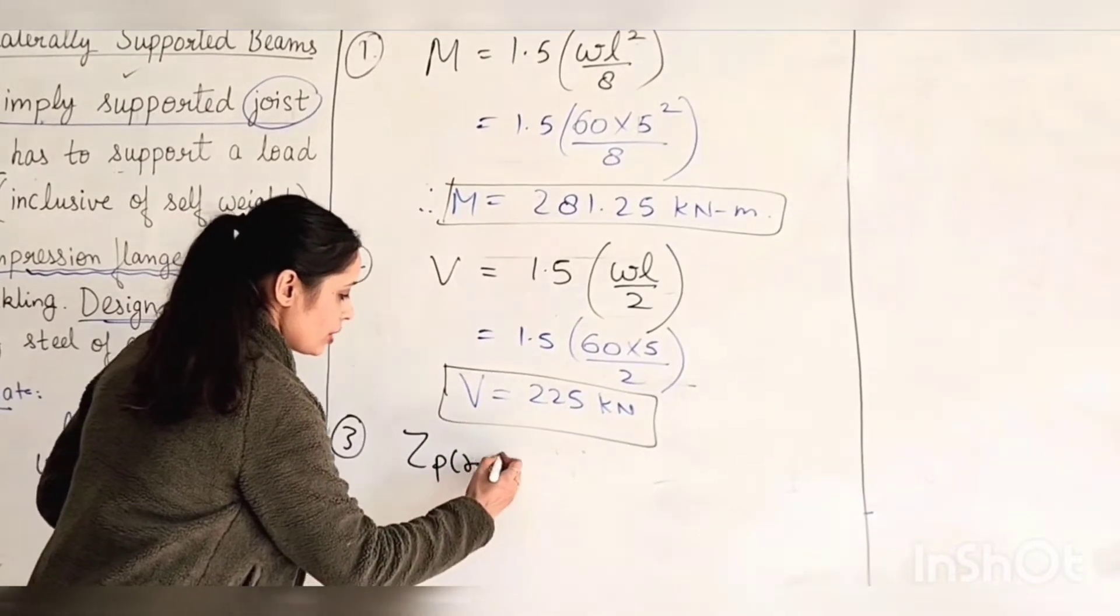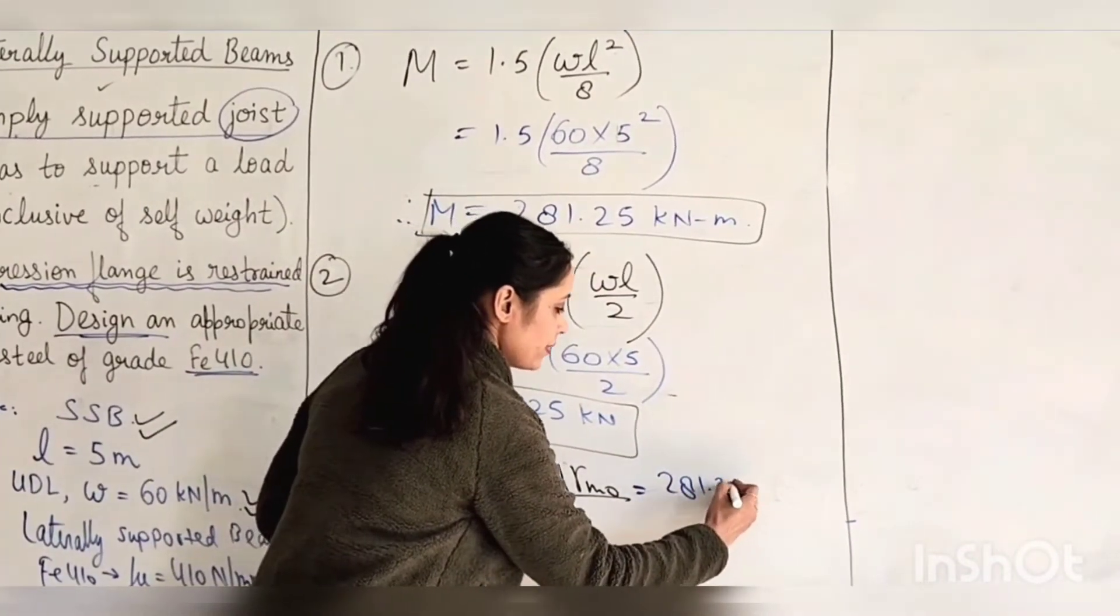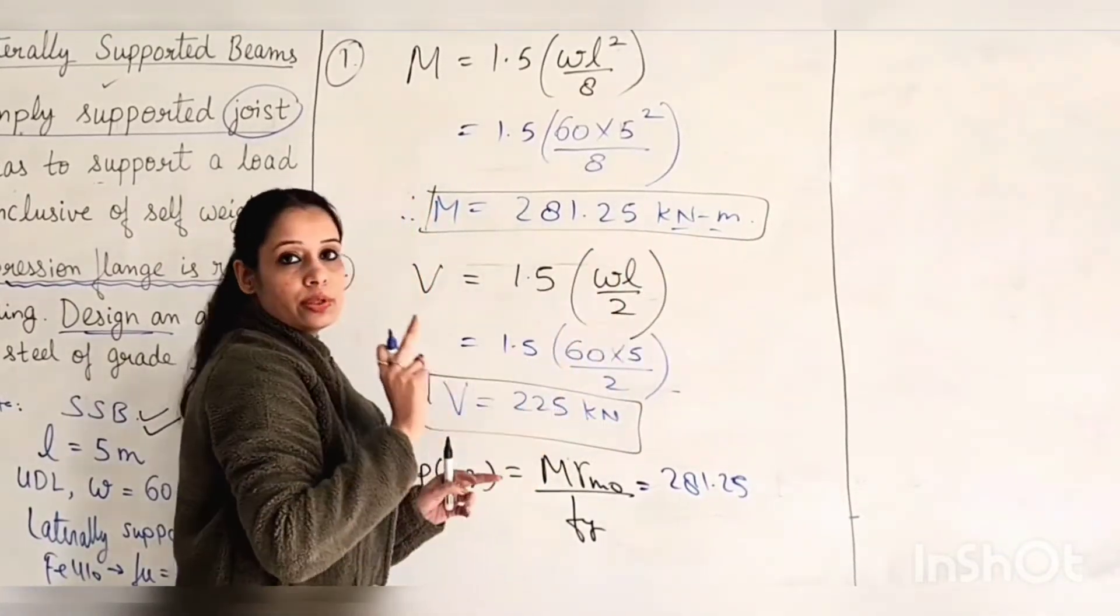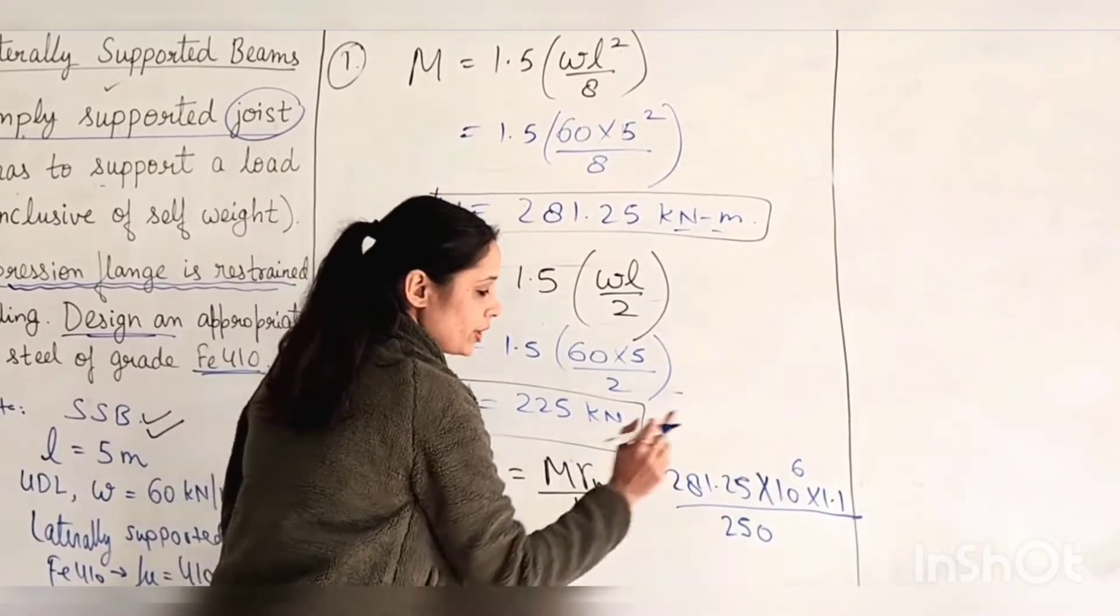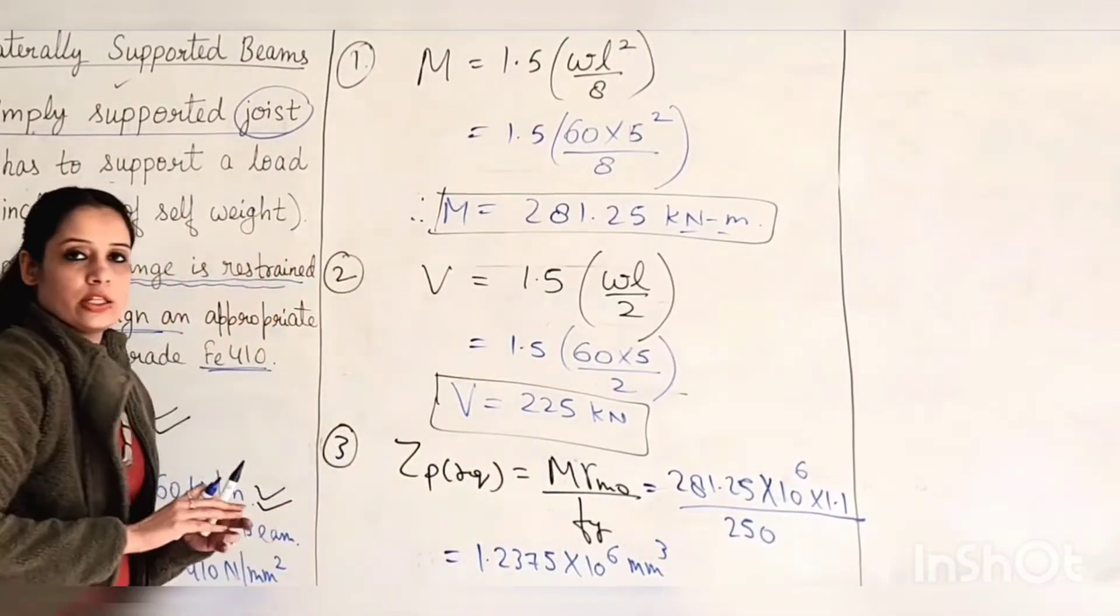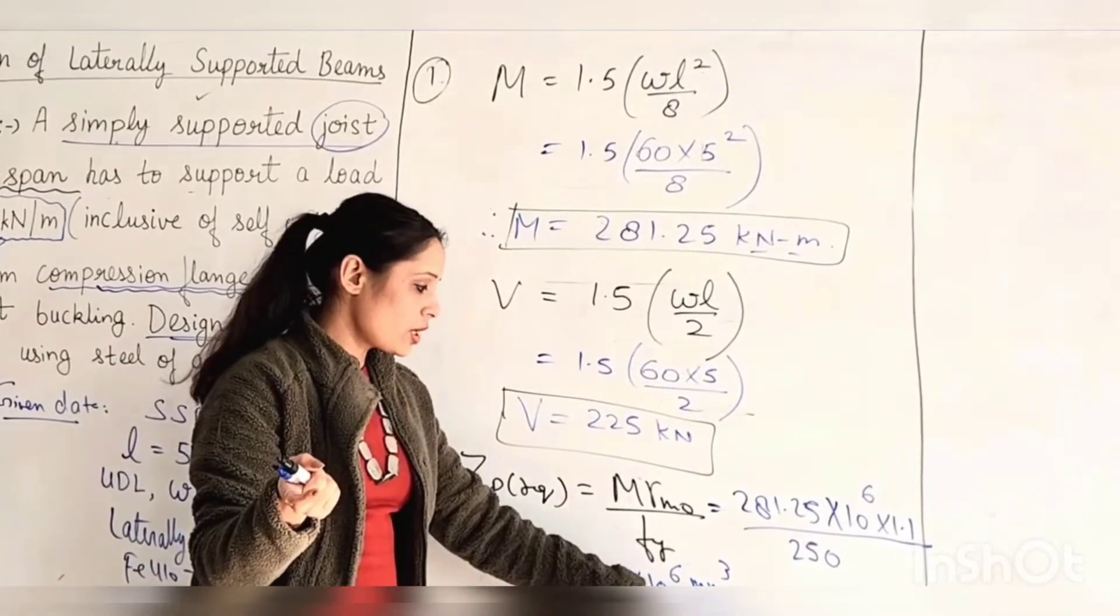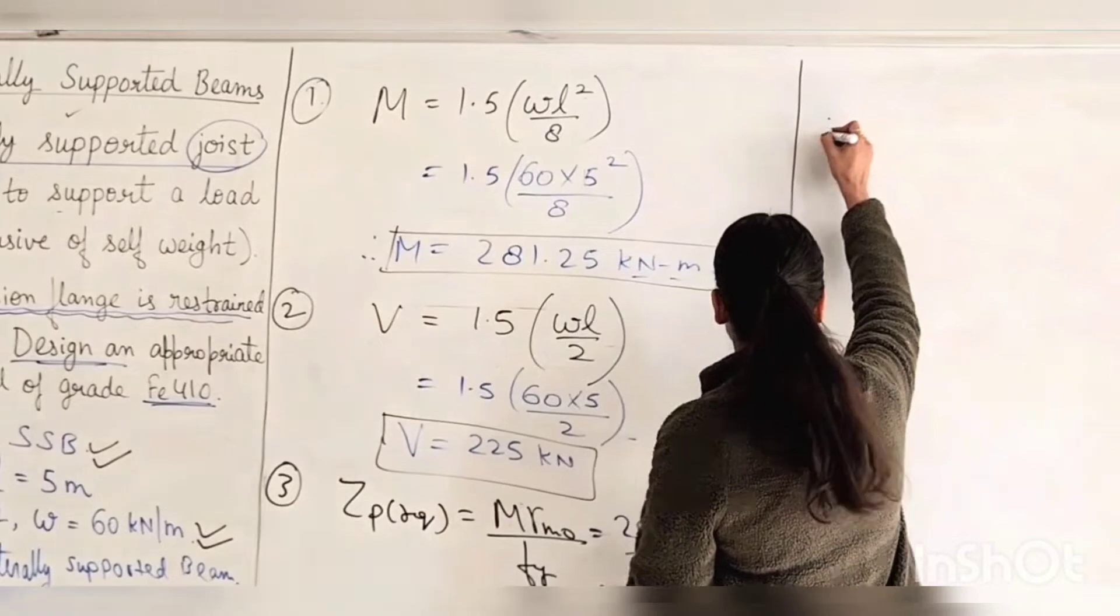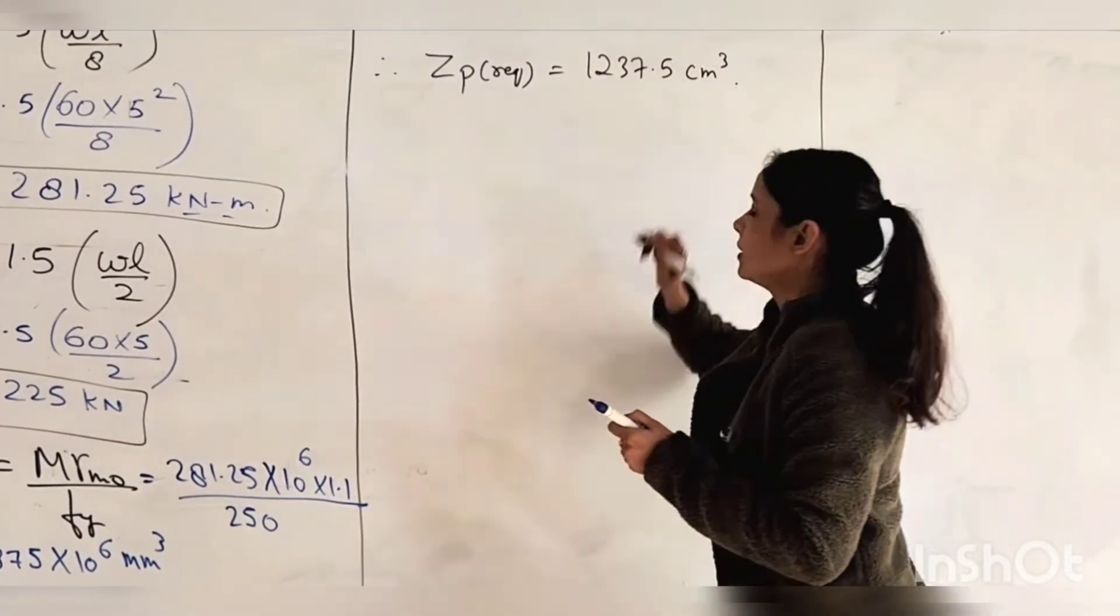And this formula, M equals beta B ZP FY by gamma M0. We will put all the values here, which is 281.25. This is kN-m. Now what we will do is convert this kN-m to N-mm. Then FY by 1.1, FY is 250, gamma M0 is 1.1. When we solve it, this is 1.2375 in mm cubed. I have to say that you have to convert it in centimeter cubed because the table is in centimeter cubed, so you can choose easily. When we convert it in centimeter cubed, we divide by 10 to the power 3. So here we will get the ZP required. This is 1237.5 centimeter cubed. This is our answer.